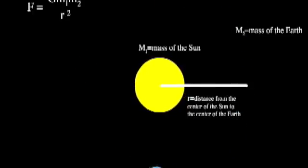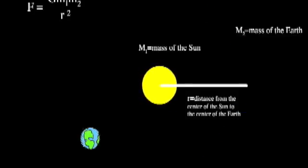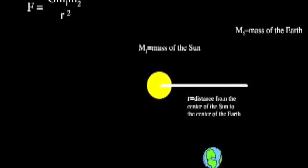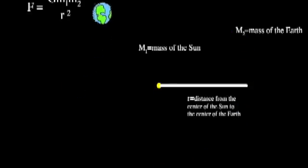The gravitational force between the sun and earth depends on the mass of the sun, the mass of the earth, and the distance between their centers. If the sun were to collapse on itself, its mass would not change. The earth's mass would not change, and the distance between the centers would not change. This means that the earth would just continue its normal orbit just as usual.